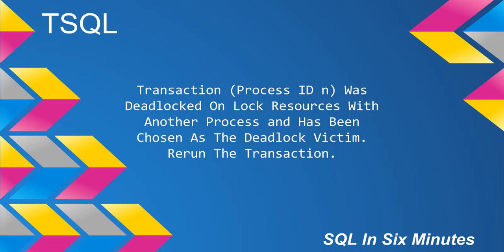This morning we're going to be looking at the error: 'Transaction process ID was deadlocked on lock resources with another process that has been chosen as a deadlock victim — rerun the transaction.' This is an error that occurs basically when two processes were trying to access the same resource and one of them got eliminated.